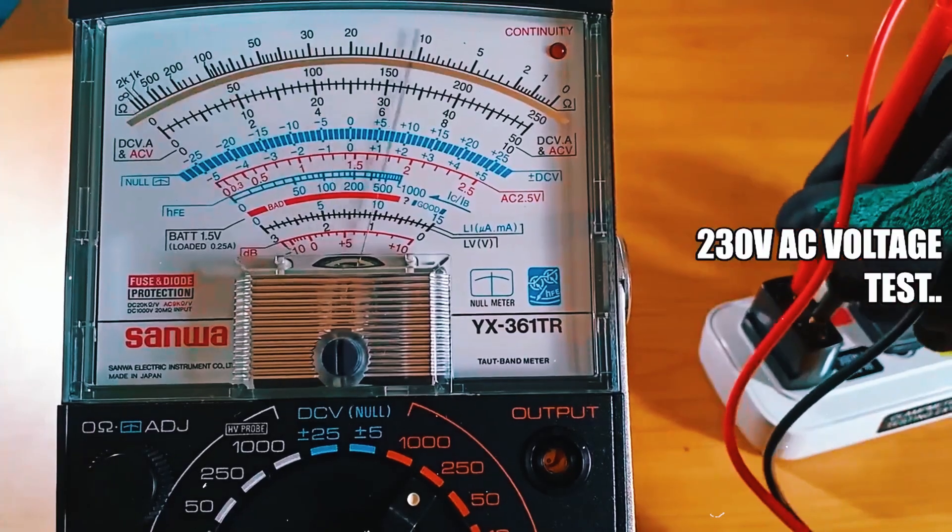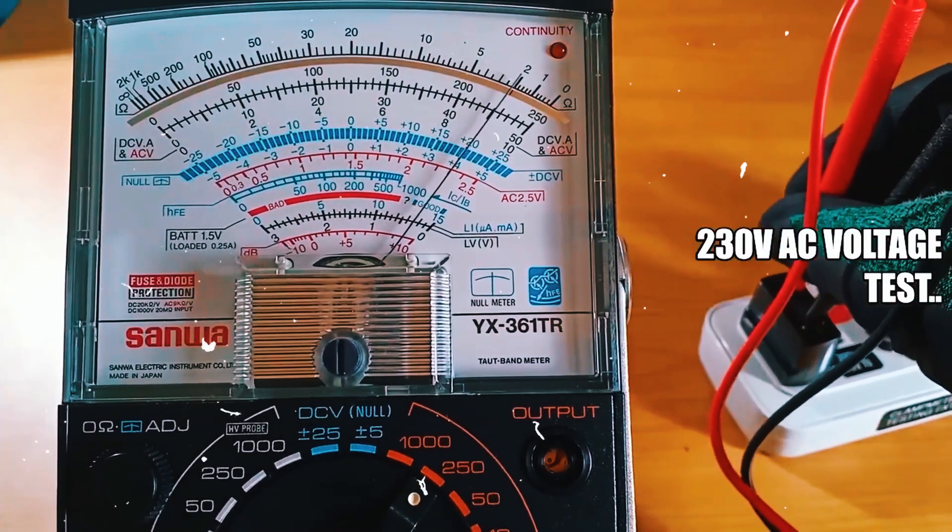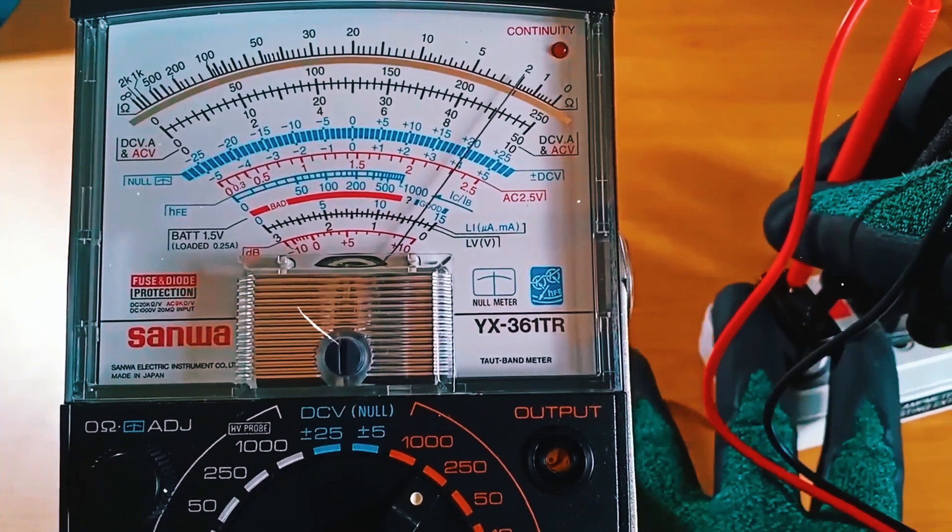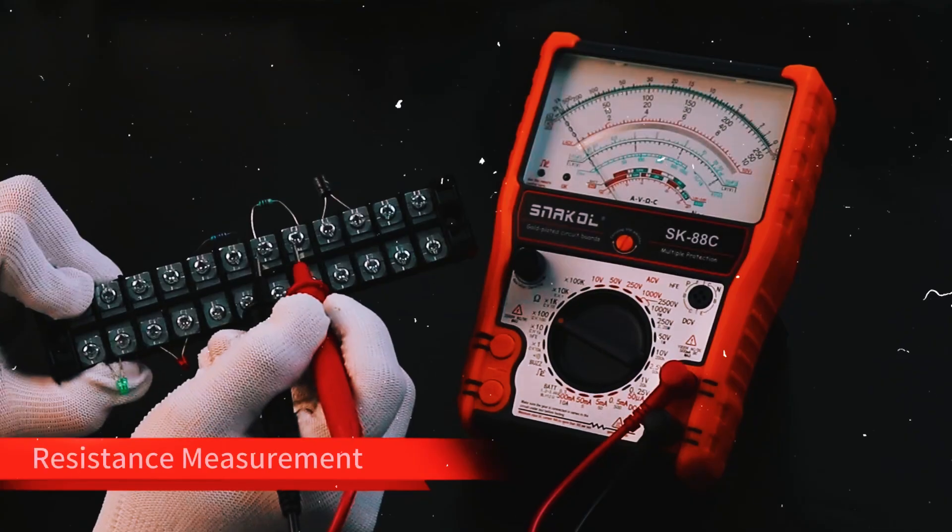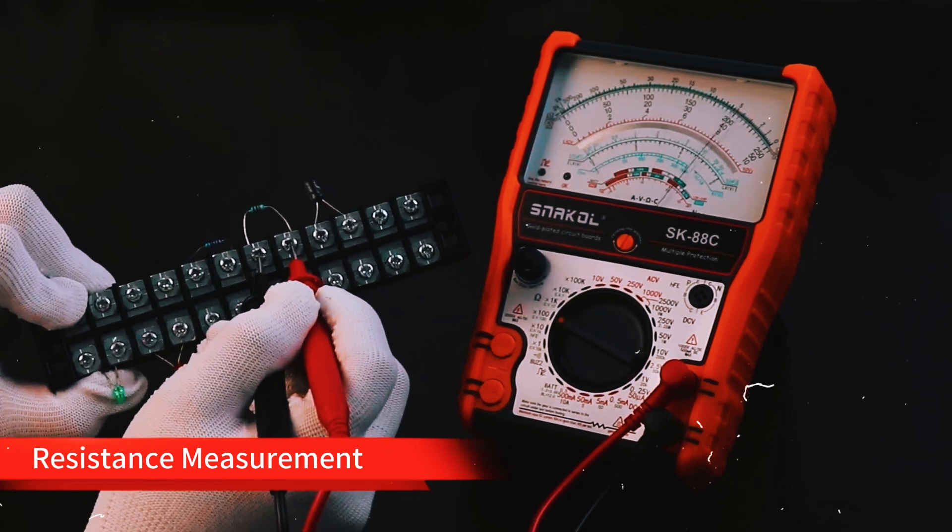Analog meters, on the other hand, can be a little harder to read accurately, especially with very small changes or fluctuating signals. But some people still prefer the old-school feel of a needle, and that's perfectly fine for specific tasks.